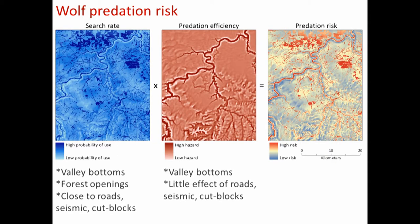Looking at the wolf habitat modeling, we know pretty well what wolves do. Generally they like to hunt in valley bottoms, preferentially hunt forest openings, and there's substantial data across many study areas that wolves select for linear features when hunting — seismic lines, roads — and those relationships were all supported with our data. We built a predictive model of where wolves hunt that includes strong effects of topography, land cover, and anthropogenic features.